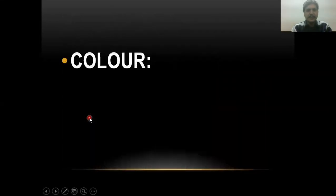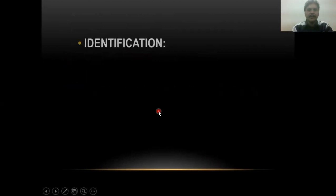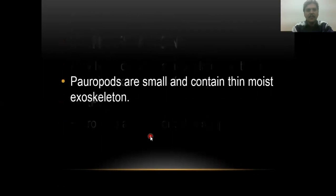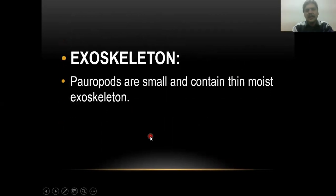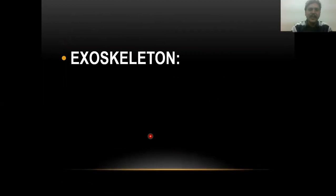Regarding color, as seen in the diagram, the color is golden brown and brown. The identification is very simple — its distinctive anal plates on the inside are a unique character. The body structure is cylindrical with a very thin chitinous exoskeleton, which is the outermost protective covering and is also a prominent character.